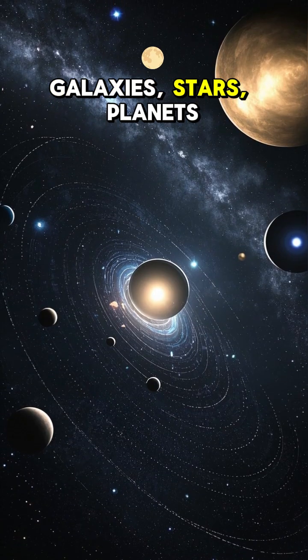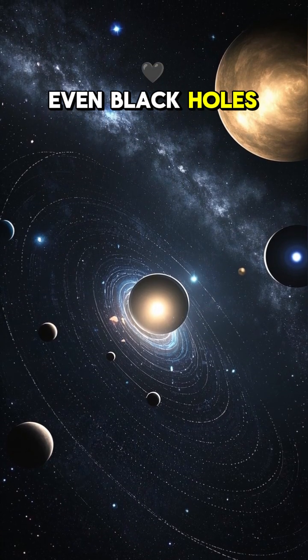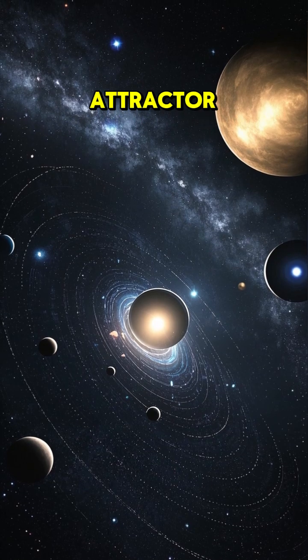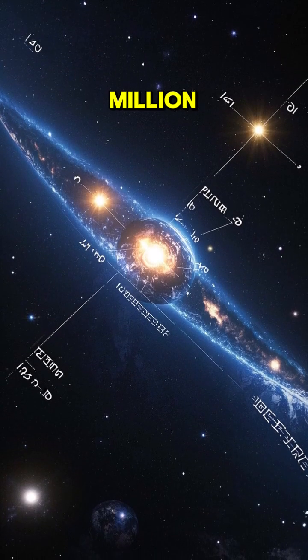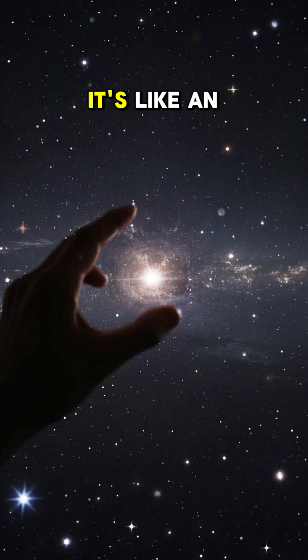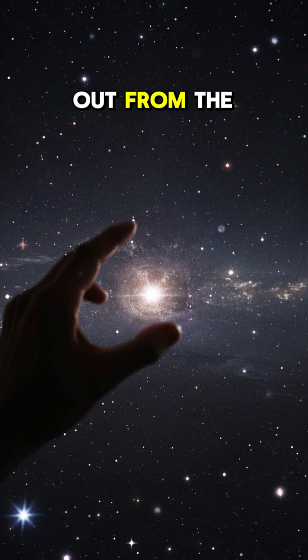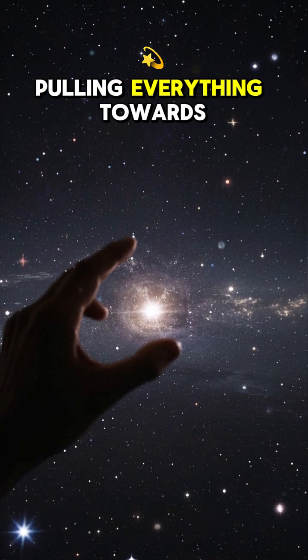Galaxies, stars, planets, even black holes. Nothing is safe from the Great Attractor. The Great Attractor is about 300 million light years away from Earth. It's like an invisible hand reaching out from the darkness, pulling everything towards it.